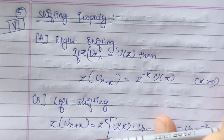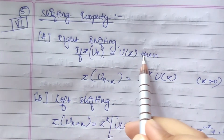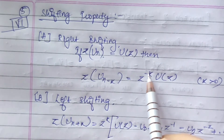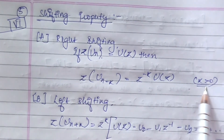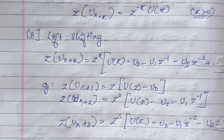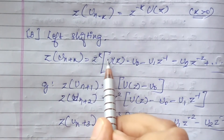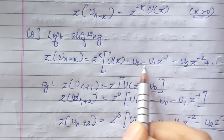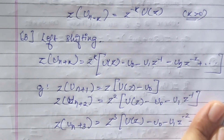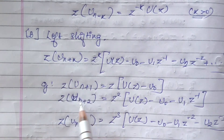There is the right shifting property and the left shifting property. In the right shifting property, if Z{u(n)} = U(z), then Z{u(n−k)} = z^(−k) · U(z), where k > 0. The left shifting property states that Z{u(n+k)} = z^k · [U(z) − u(0) − u(1)·z^(−1) − u(2)·z^(−2) − ... and so on], for k > 0.